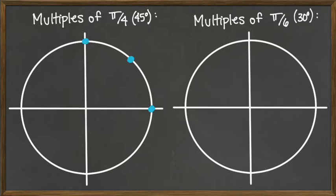So we'd have our next point at the top of the unit circle, then a point in the middle of the second quadrant, then a point at the left-hand side, a point in the middle of the third quadrant, a point at the bottom of the unit circle, and finally a point at the middle of the fourth quadrant. Those are the locations evenly spaced around the unit circle that are all multiples of 45 degrees.